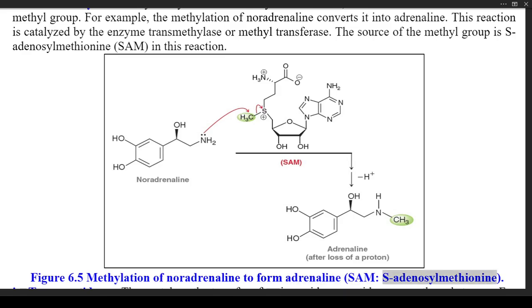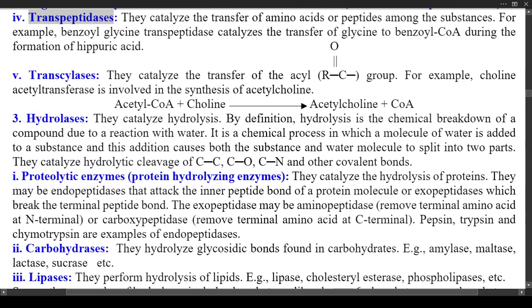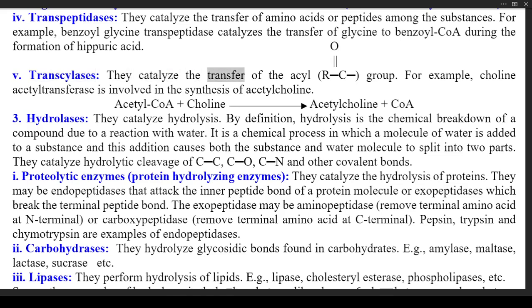(4) Transpeptidases — they catalyze the transfer of amino acids or peptides among substances. For example, benzoyl-glycine transpeptidase catalyzes the transfer of glycine to benzoyl-CoA during the formation of hippuric acid. (5) Transacylases — they catalyze the transfer of the acyl (RC=O) group. For example, choline acetyltransferase is involved in the synthesis of acetylcholine: Acetyl-CoA + choline → acetylcholine + CoA.